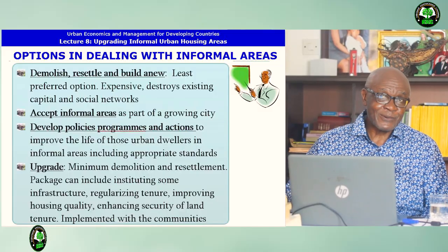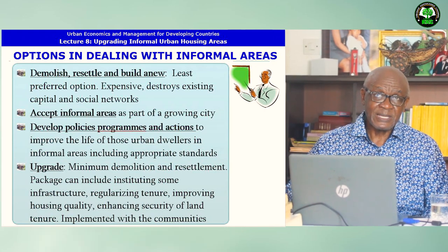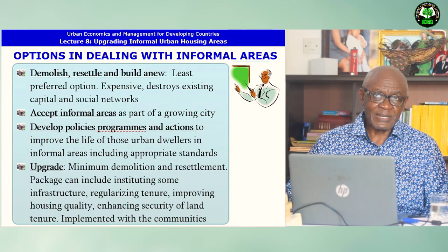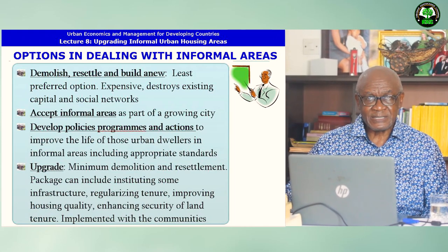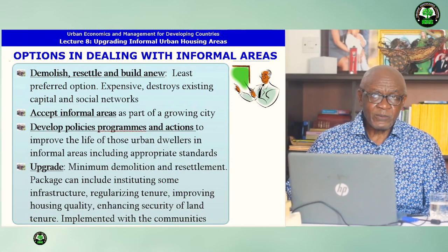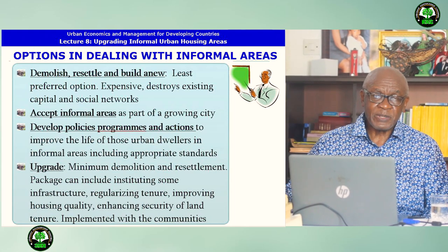What are the options that we have for dealing with informal areas? You can think of demolishing them, resettling and building anew. This is the least preferred option — it is expensive and it destroys existing capital and social networks. A better approach is to accept informal areas as part of the growing city and develop policies, programs and actions to improve the life of those urban dwellers in informal areas, including looking at appropriate standards. To upgrade them means minimum demolition and resettlement. The upgrading package can include instituting some infrastructure, regularizing tenure, improving housing quality, enhancing security of land tenure, and implementing all these together with the communities.